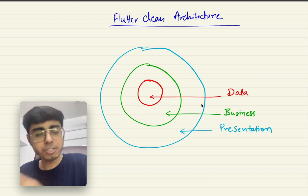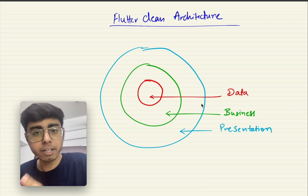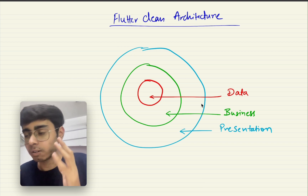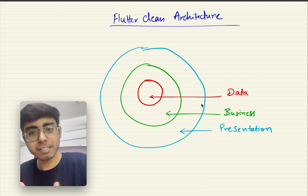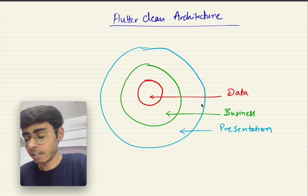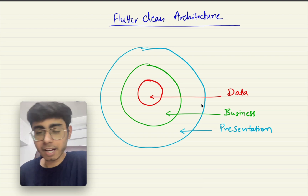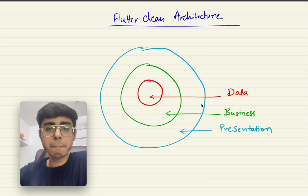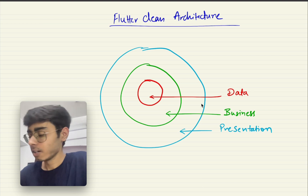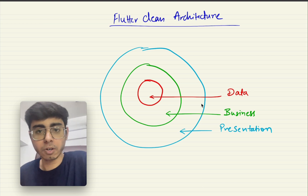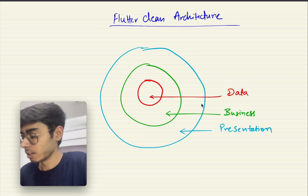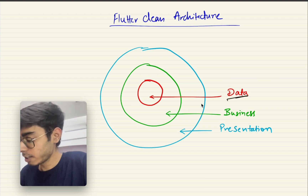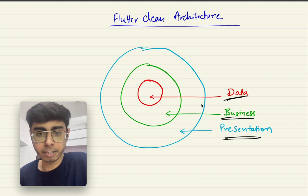Clean architecture is just a better way of creating a scalable folder structure, which is maintainable and scalable. This clean architecture has three major folders. Let's say you are creating a feature in your Flutter project — that feature is going to have three main folders: data, business, and presentation.